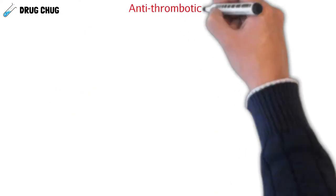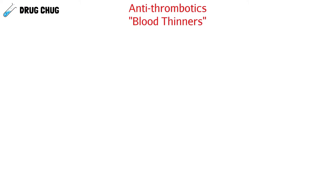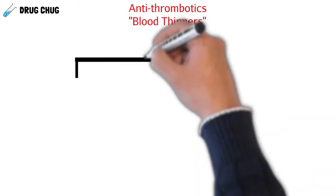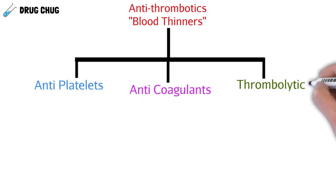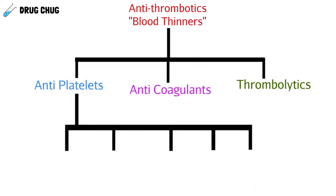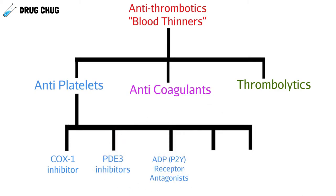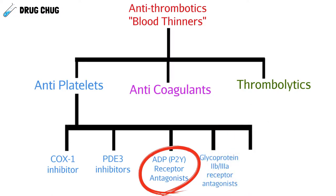At the end we'll have a short quiz. A quick overview: antithrombotics are also known as blood thinners and they're broken down into three categories — antiplatelets like clopidogrel, anticoagulants, and thrombolytics. We're going to focus on antiplatelets, which break down into COX-1 inhibitors like aspirin, PDE3 inhibitors, ADP P2Y12 receptor antagonists like clopidogrel, glycoprotein 2b3a receptor antagonists, and thrombin receptor antagonists.